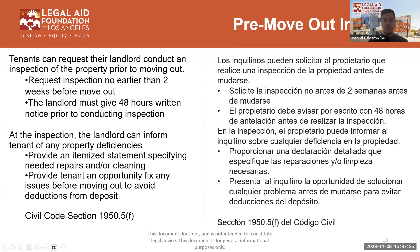Tenants can request their landlord to conduct an inspection of the property prior to moving out of their unit. The requested inspection cannot be earlier than two weeks before moving out, and the landlord must give you 48 hours' written notice prior to conducting the inspection. At the inspection, the landlord can inform the tenant of any property deficiencies and provide an itemized statement specifying the needed repairs and/or cleaning. This gives the tenant an opportunity to fix any issues before moving out to avoid deductions from the deposit.